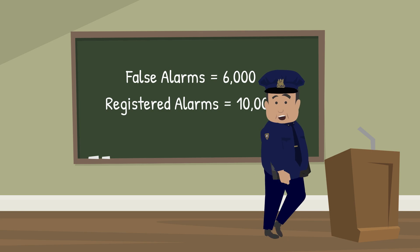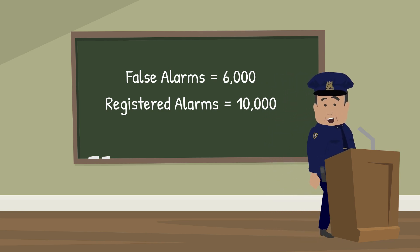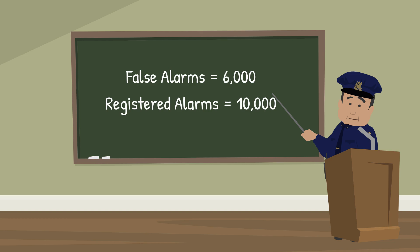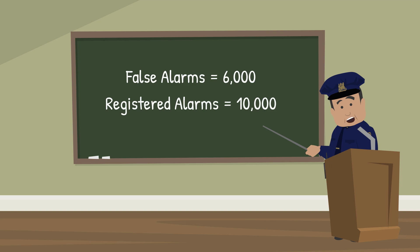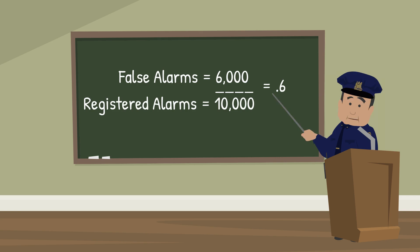We noted how many dispatches were actual burglaries or burglary attempts and how many were false alarms. To calculate our false alarm factor, we simply divide the number of false alarm dispatches by the number of registered alarm systems. Shown here are the estimated numbers from our first year. As you can see, we had a false alarm factor of 0.6.